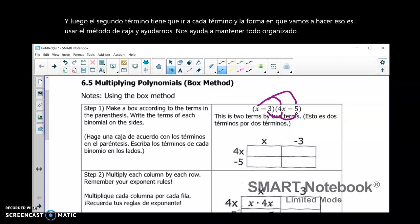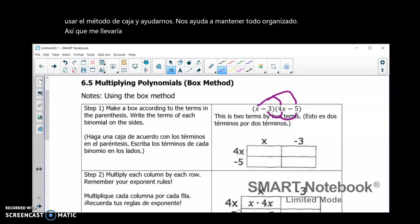So, I would take the two polynomials. I got x and minus 3. And then in the other one, I have 4x and minus 5. Draw my little boxes. And that would be my first step.